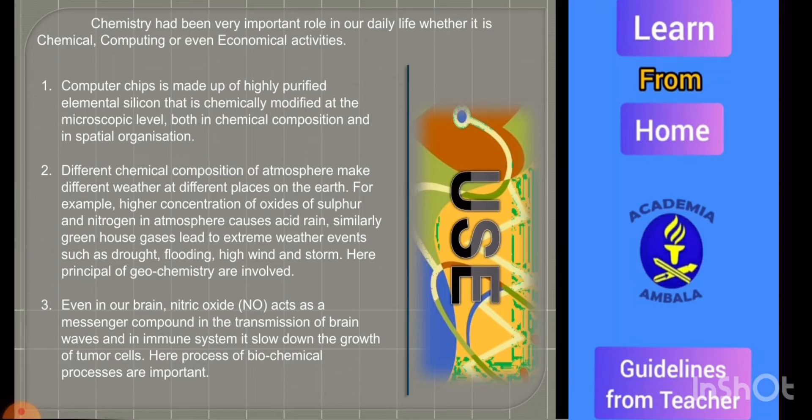Different chemical composition of atmosphere make different weather at different places. For example, higher concentrations of oxides of sulfur and nitrogen in atmosphere cause acid rain. Similarly greenhouse gases lead to extreme weather events such as drought, flooding, high wind, and storm. Also nitric oxide acts as a messenger compound in the transmission of brain waves and in immune system. It slows down the growth of tumor cells. Here chemical processes are important.